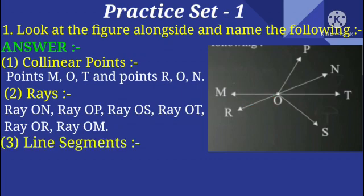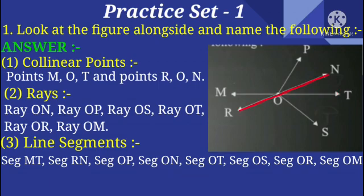Line Segments. If we join two distinct points using a ruler, we get a line segment. Now look at the figure. The line segments are: Segment MT, Segment RN,